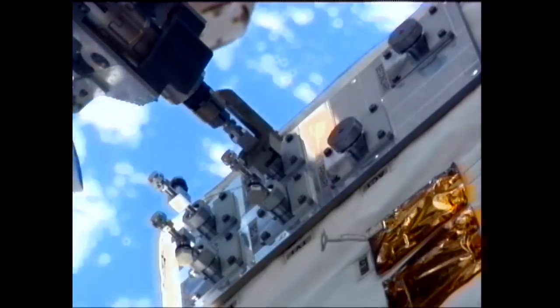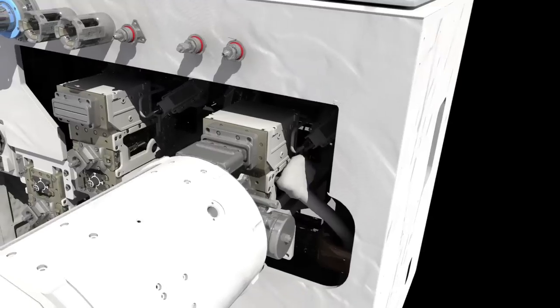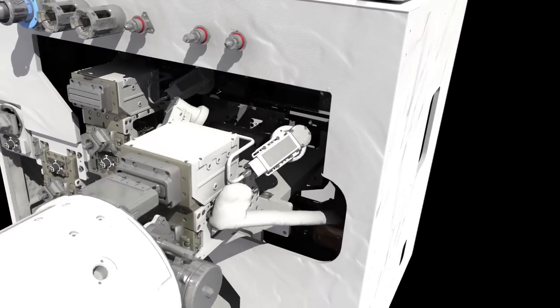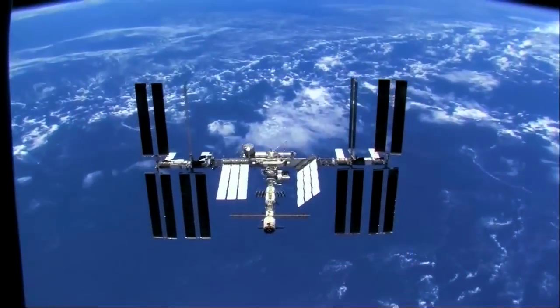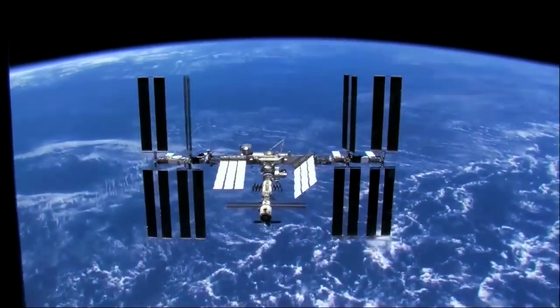Station astronauts won't be involved. This will be a mission run from the ground. RRM will demonstrate a number of essential tasks. At the end, it'll attempt a first-of-its-kind simulated fuel transfer between two pieces of hardware. Not so easy when you're orbiting the planet at 18,000 miles an hour.